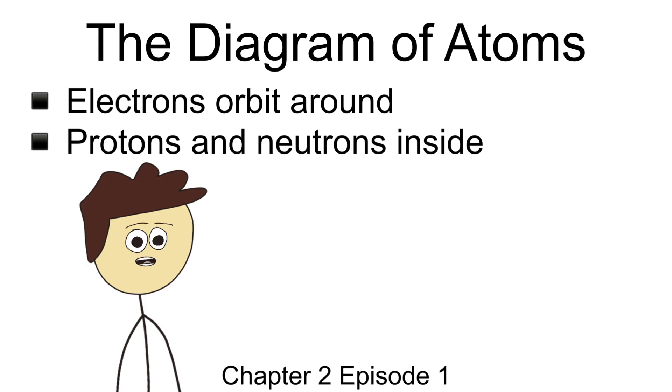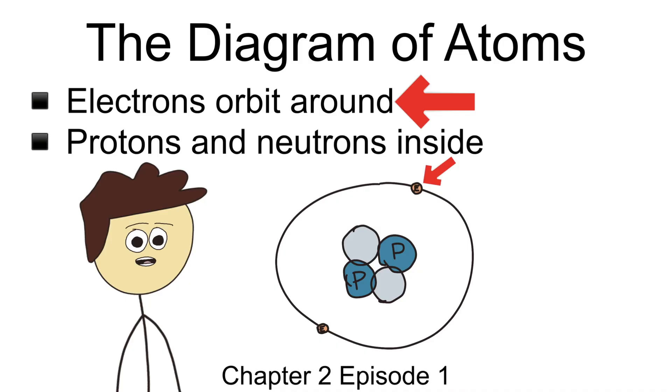We've developed a simple way to visualize what a typical atom looks like. Electrons are the smallest, lightest particles that circle what we call the atomic nucleus, located in the middle. This atomic nucleus is made up of heavier particles known as protons and neutrons.